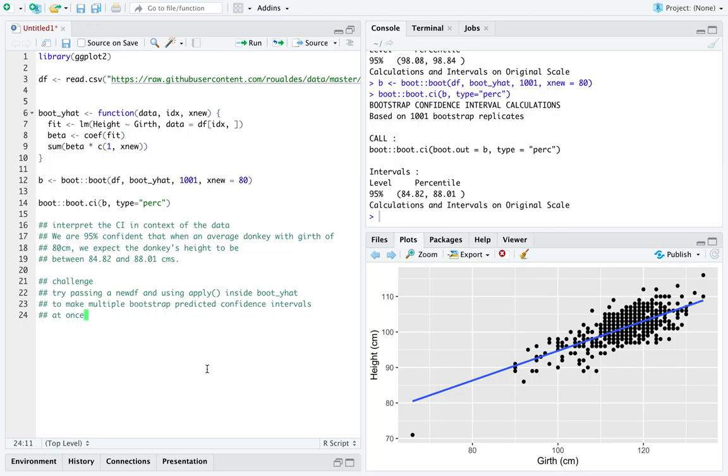I would encourage you to try passing a new data frame. So instead of a single observation, xnew, into your function boot y-hat, see if you can use the function apply inside boot y-hat to make multiple bootstrap predicted confidence intervals at once.